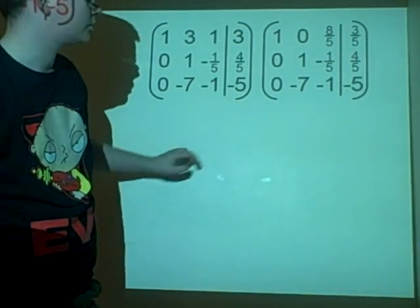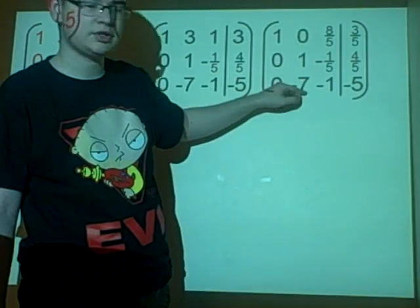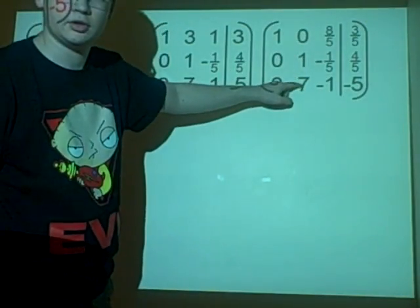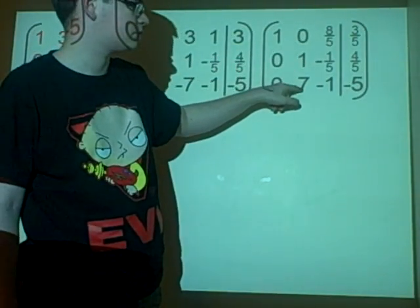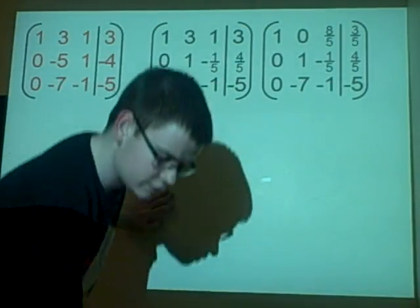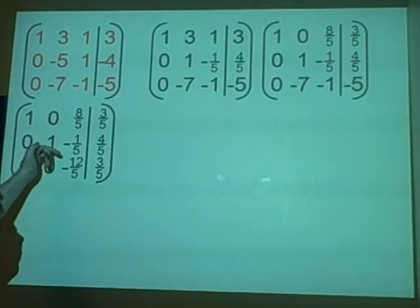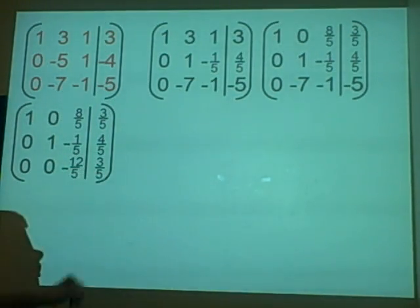Right, next off we want to get this one to be 0. So we can add 7 of this, 7 of this to that. We're adding 3 of this, that would be a 0, 7 of this so that would be a 0. We have 7 of this, I can't remember what these are, but that will give you minus 12 over 5 and 3 over 5.